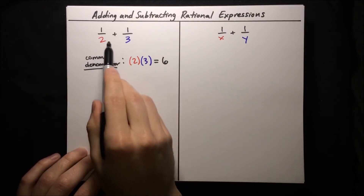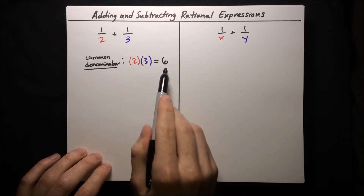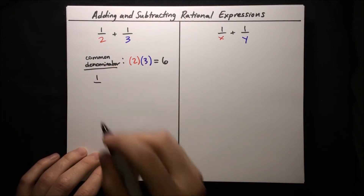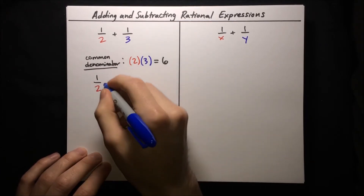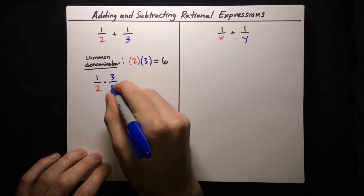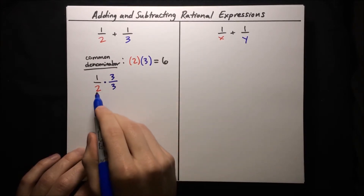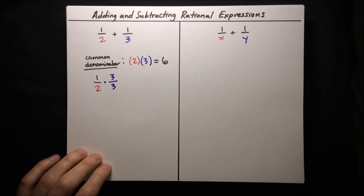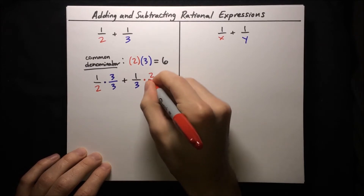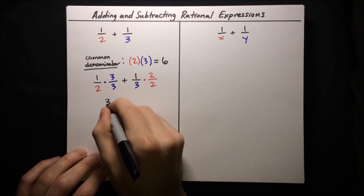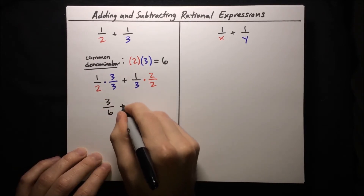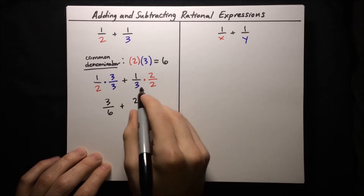Let's find equivalent forms of these fractions that have denominators of 6. Starting with 1/2, we convert it to have a denominator of 6 by multiplying top and bottom by 3 over 3 — we're just multiplying by 1 so it doesn't change the fraction — and 2 times 3 gives us a denominator of 6. Then for the 1/3 fraction, we multiply by 2 over 2. Now 1 times 3 is 3 over 6, plus 1 times 2 is 2 over 6.